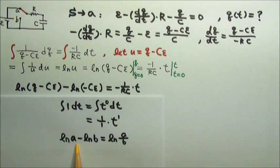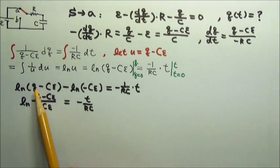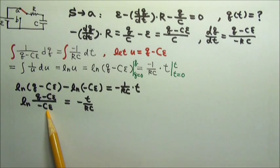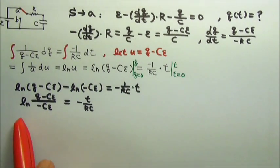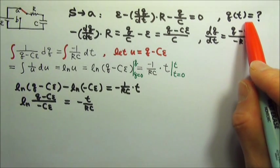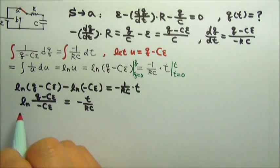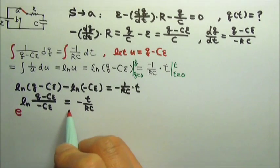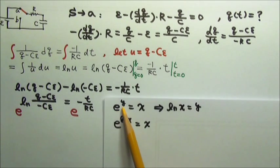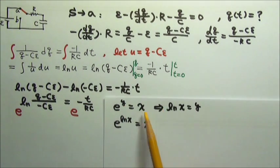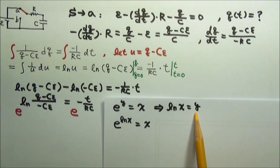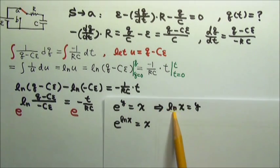Because natural log a minus natural log b equals to natural log a divided by b, we can turn this side into that. We want to use this to solve for q as a function of time. So what we can do is we can do e to this power equals to e to that power. We know that if e to the y equals to x, then the natural log x would equal to y. So if we substitute y with natural log x, we would get e to the natural log x equals to x.